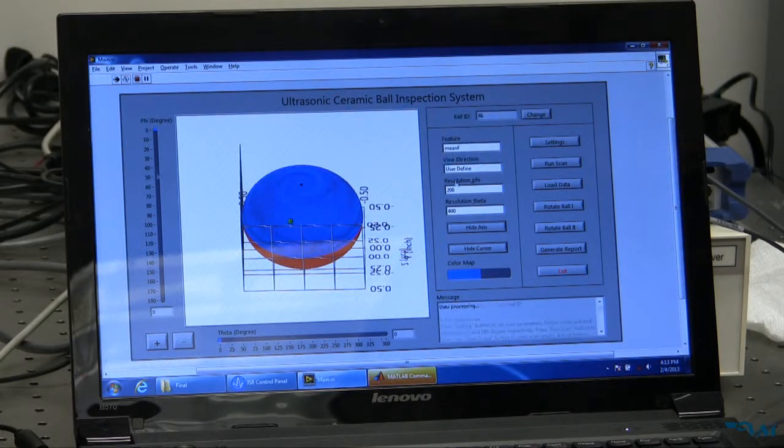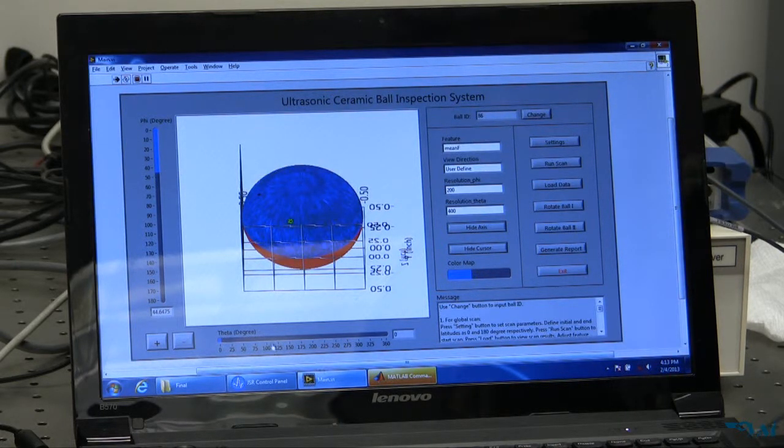resolution, and color map. Some features may be more sensitive to a particular crack than others. Users can also use the color map slide to enhance the image contrast.